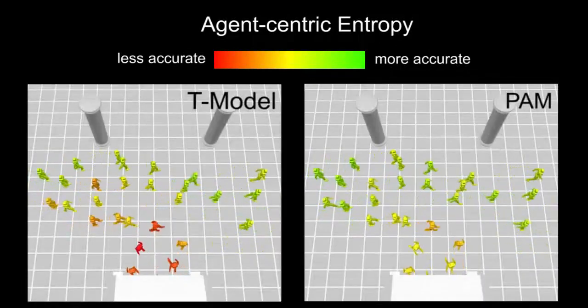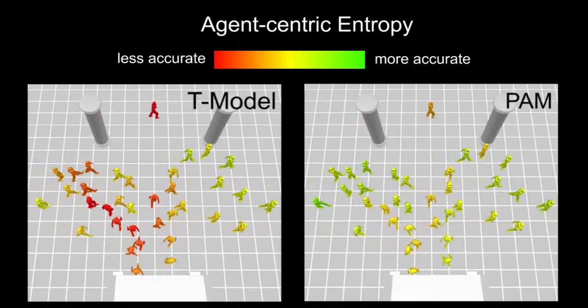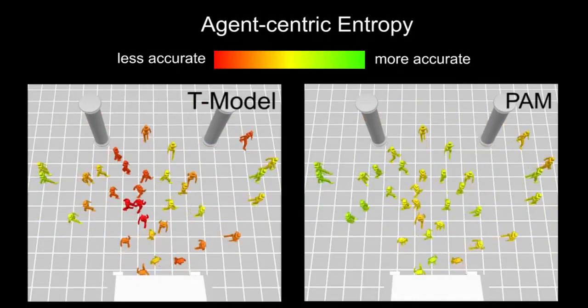Our method is egocentric and captures the fact that accuracy changes across agents in different positions and different times, highlighting where each simulation matches the data well and where it has problems.